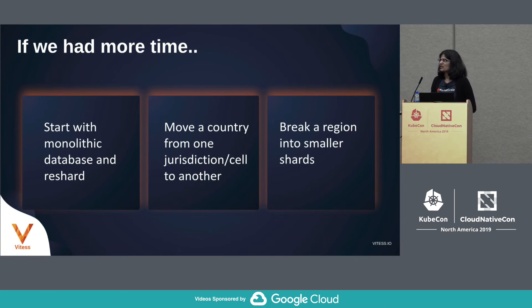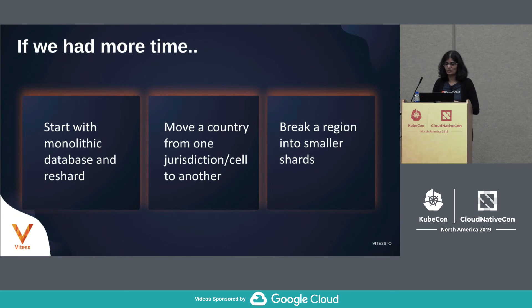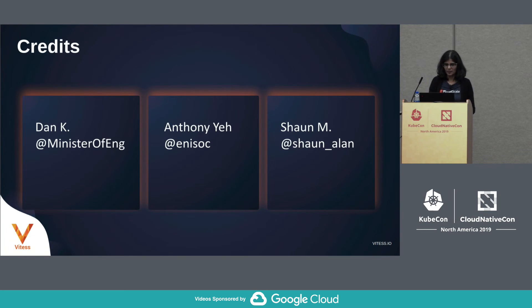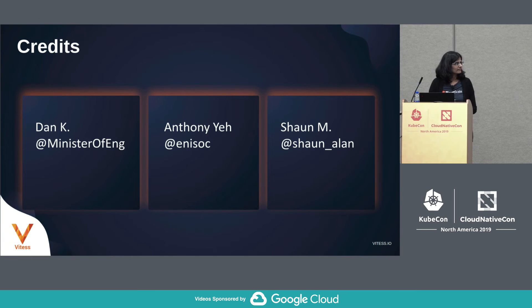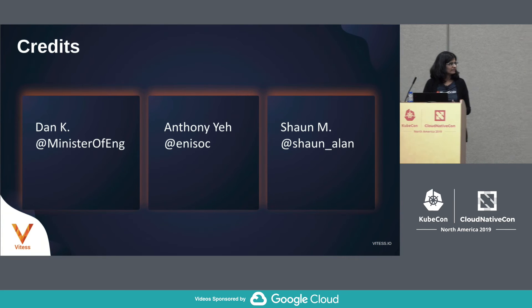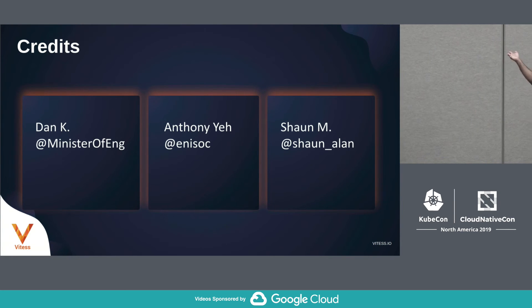If we had more time, we would have liked to show starting with a monolithic database, re-sharding it, and pushing data out into various regions. You might also want to move a country from one jurisdiction to another — Brexit — or break a region into smaller shards because you have too much data in one jurisdiction. Because we use only one or two bytes at the beginning for specifying geographic location, if you have hundreds of millions of users in a specific country and want to further split that data, all of that works.